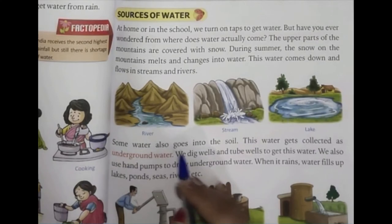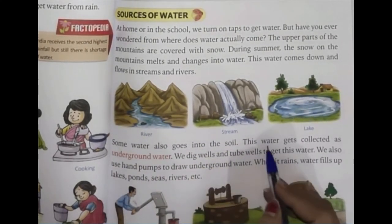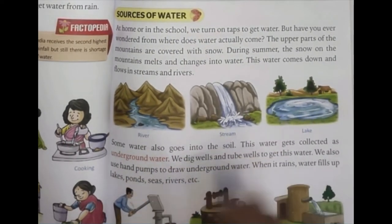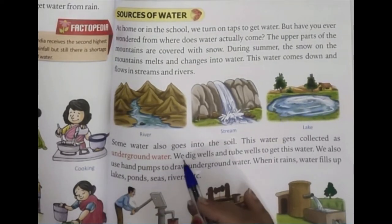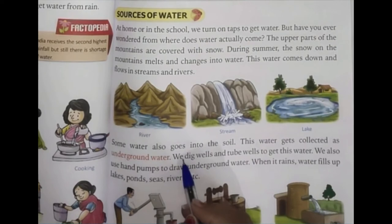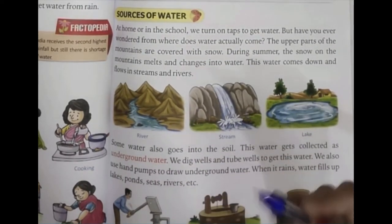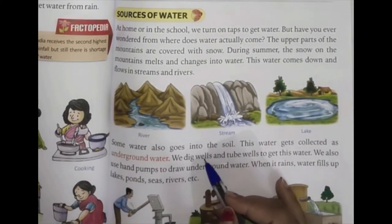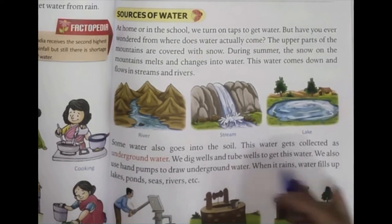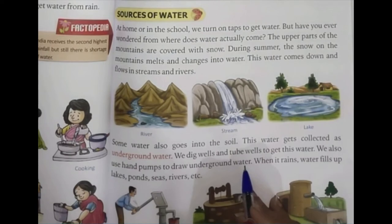Some water also goes into the soil. This water gets collected as underground water. We dig wells and tube wells to get this water. We use hand pumps to draw underground water.